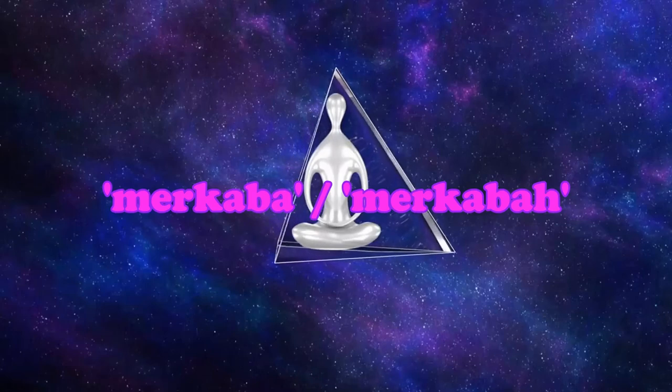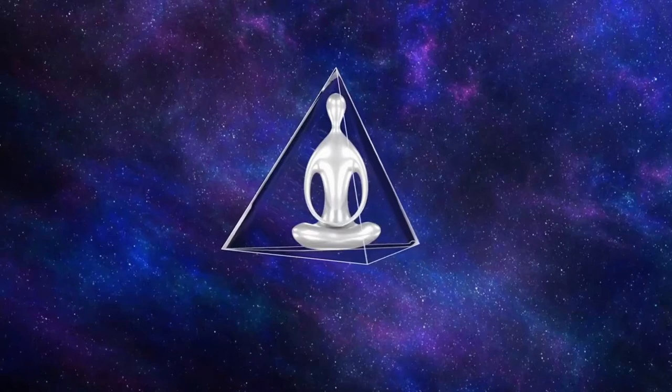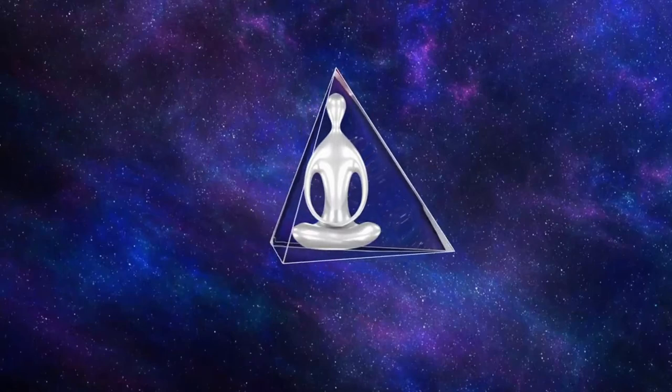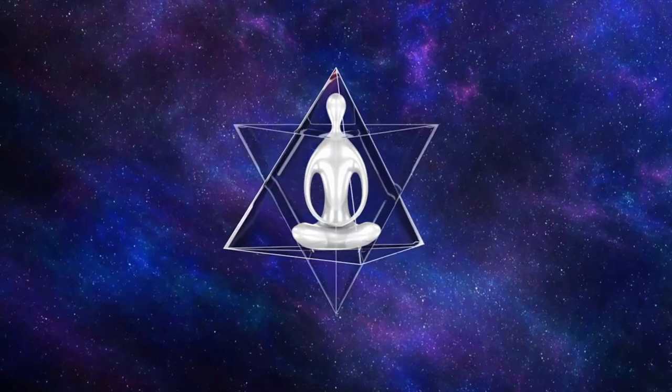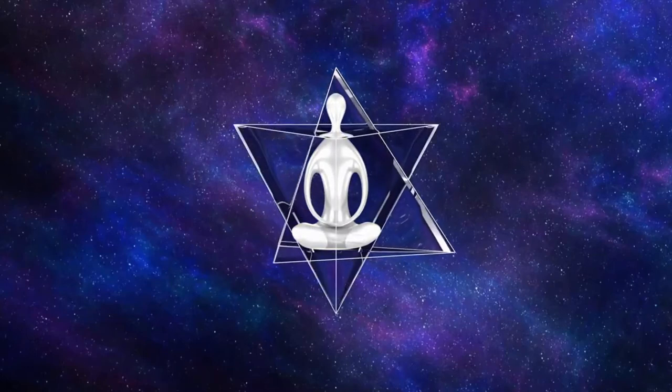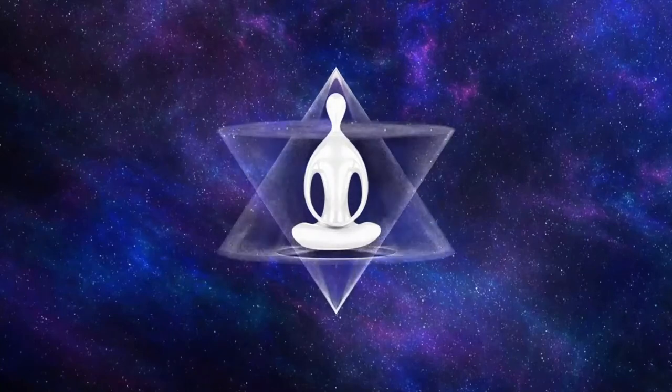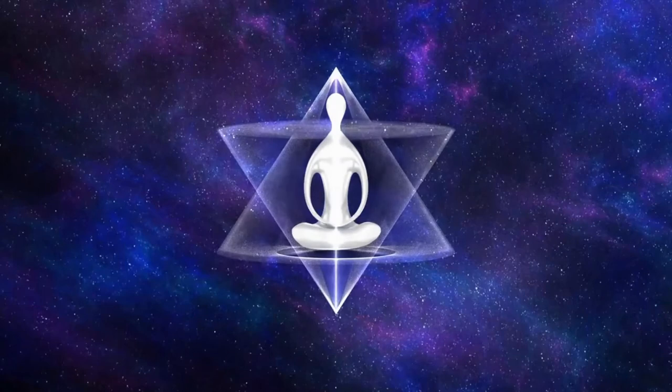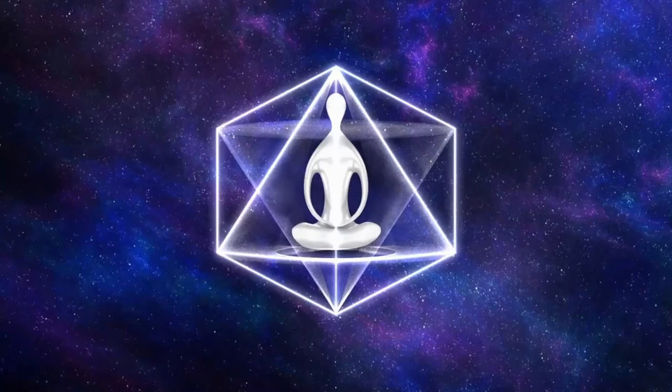Merkava translates literally from Hebrew to light, spirit, body. The base shape of a Merkava is made of two intersecting tetrahedrons that spin in opposite directions, creating a third dimensional energy field. This field is your EMF field, and its shape gains new complexities as the frequency is turned up. It provides protection and is the vehicle that transports consciousness to higher dimensions.